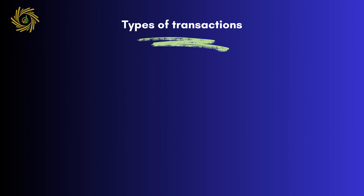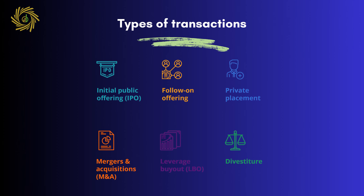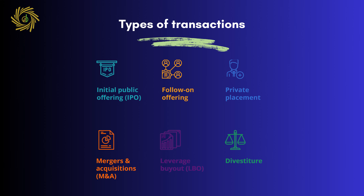Let's explore the various types of transactions that can take place between the different participants in capital markets. The first is an initial public offering, or IPO, which occurs when a company issues securities to the public for the first time. Follow-on equity offerings refer to instances when companies return to public markets to raise additional funds. Private placements involve companies raising money through private channels. Mergers and acquisitions involve one company purchasing another, while leveraged buyouts refer to a type of acquisition where a company uses a significant amount of leverage to acquire another business with minimal equity. Finally, a divestiture occurs when a company sells off a business. It's essential to be familiar with these different types of participants and transactions that take place in the capital markets as we progress through this course.